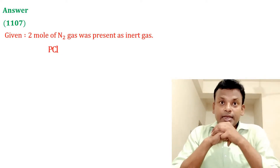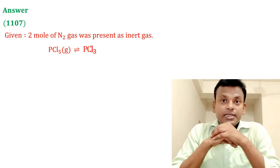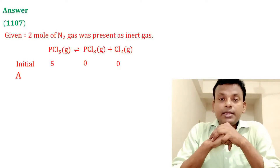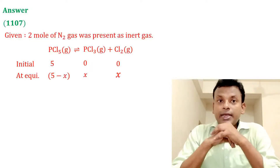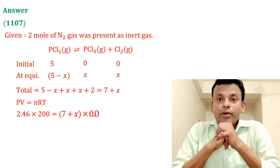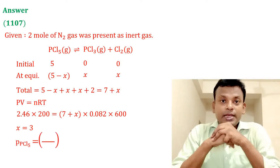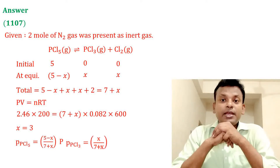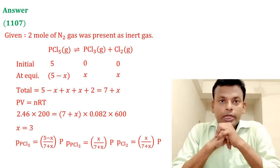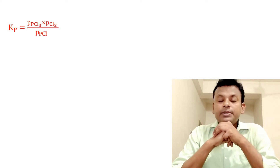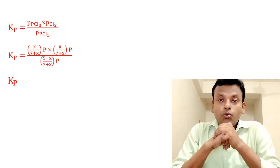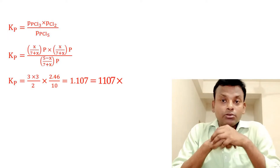N2 is an inert gas. PCl5 gives PCl3 plus Cl2. Initially 5 moles, 0, 0; at equilibrium: (5 − x), x, x. Total moles equal 7 + x. Using PV = nRT and putting in all values, x equals 3. P(PCl5) = (5 − x)/(7 + x) times P; P(PCl3) = x/(7 + x) times P. Kp equals P(PCl3) times P(Cl2) divided by P(PCl5), giving Kp = 1.107 = 1107 times 10 to the power minus 3. Answer is 1107.